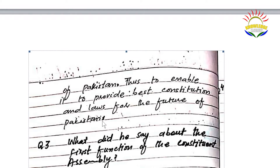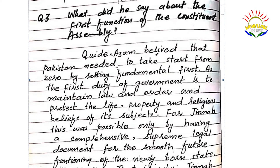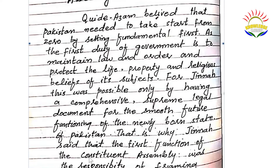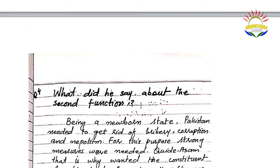Question number three: what did he say about the first function of the constituent assembly? Quaid-e-Azam believed that Pakistan needed to take start from zero by setting fundamentals first, as the first duty of government is to maintain law and order and protect the life, property, and religious beliefs of its subjects. For Jinnah, this was possible only by having a comprehensive supreme legal document for the smooth future functioning of the newly born state of Pakistan. That is why Jinnah said that the first function of the constituent assembly was the responsibility of framing the future constitution of Pakistan.